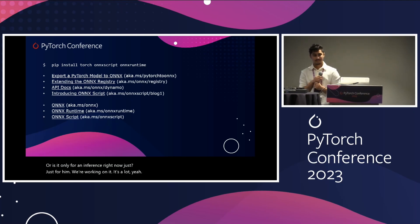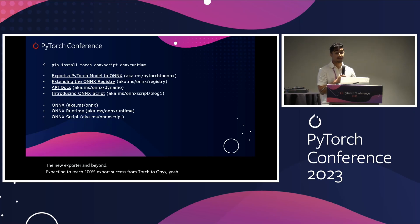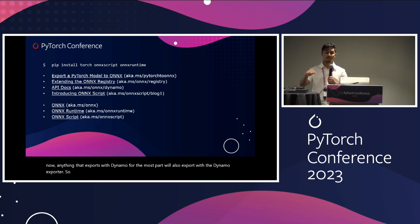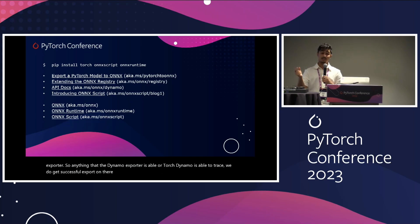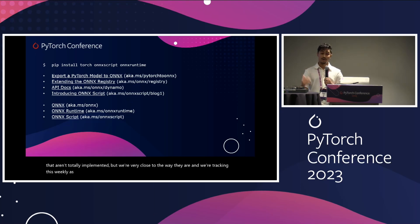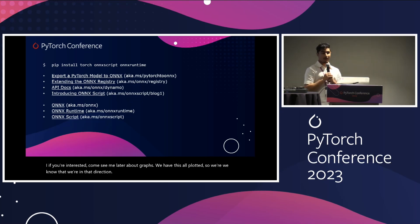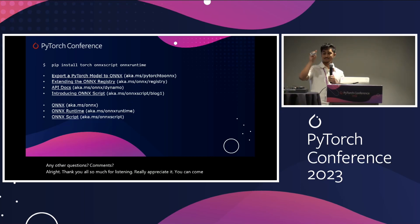Between the new exporter and the ONNX tools, are you expecting to reach 100% exporter success from PyTorch to ONNX? Where we are right now, anything that exports with Dynamo will also export with the Dynamo exporter for the most part. So anything Torch Dynamo is able to trace, we do get successful export on. There are some graph breaks and a couple of niche ops that aren't totally implemented, but we're very close and we're tracking this weekly as we make iterations. We're getting better and better performance week over week. If you're interested, come see me later — we have this all plotted. Thank you all so much for listening.